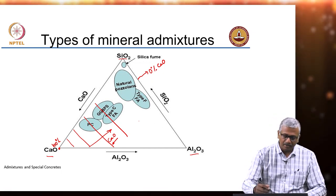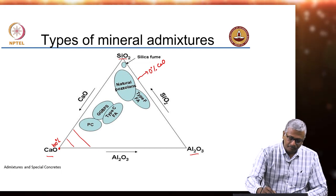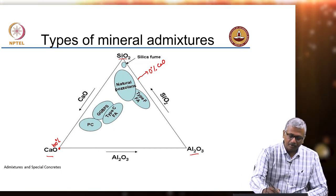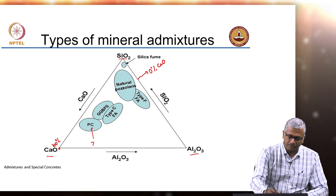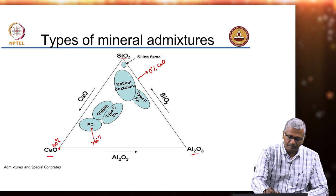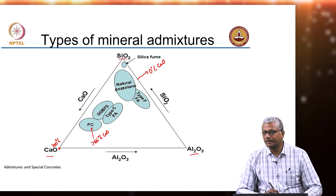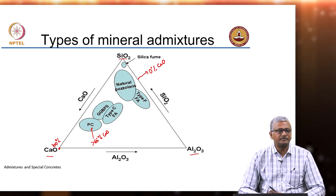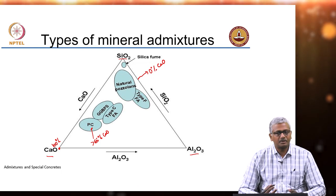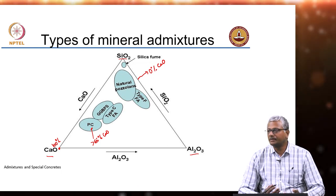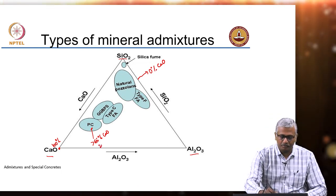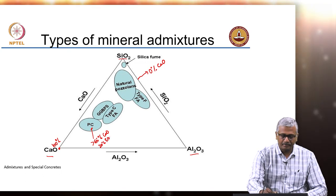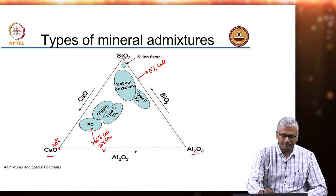If you look at typical Portland cement, we are obviously in a lime-rich condition. Generally it has got more than 65% calcium oxide. It has got a significant amount of silica, but not as much alumina. Typical Portland cement will have around 65% CaO, about 20% silica, and only about 6 to 8% alumina.